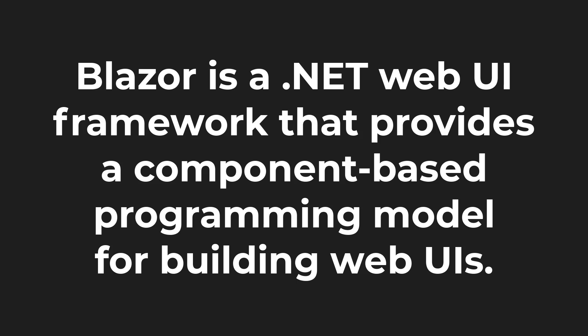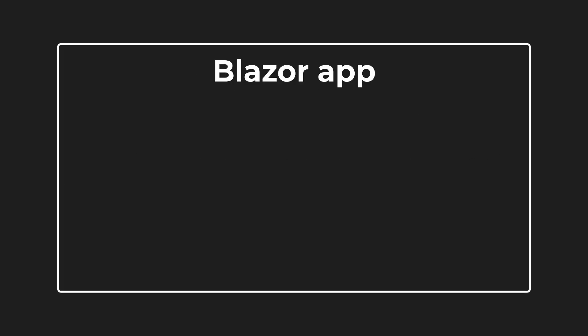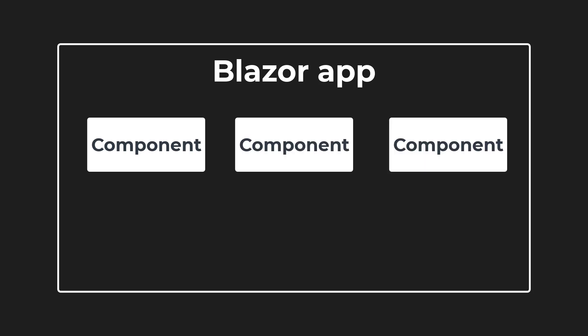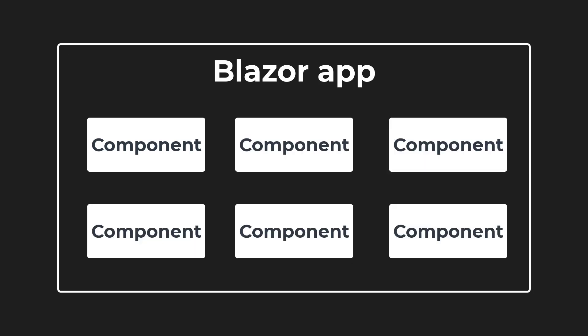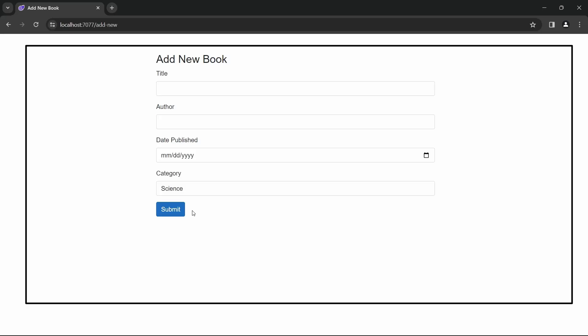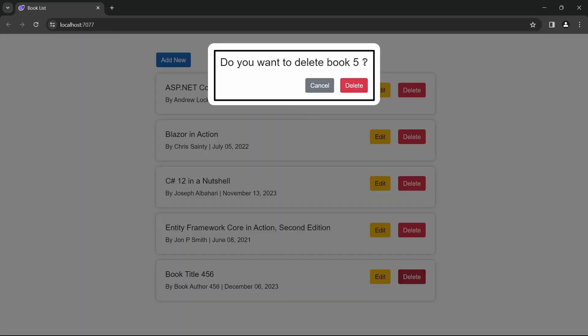Blazor is a .NET web UI framework that provides a component-based programming model for building web UIs. Components are the fundamental building blocks of a Blazor application. We create a Blazor application using these reusable elements of web UI called components. A component can be a page or a part of a page, such as a data entry form or even a dialog.